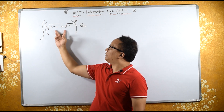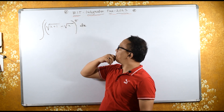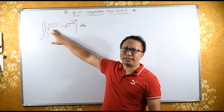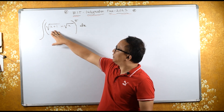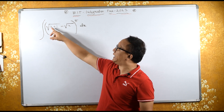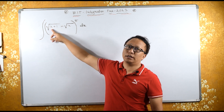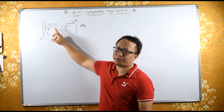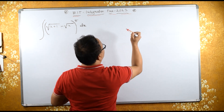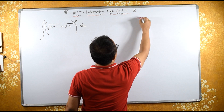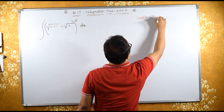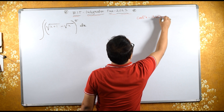Now what we can do is rationalize, but it will be very lengthy. Instead, I will use hyperbolic substitution — x equals to sinh squared. The reason is we know that cosh squared x minus sinh squared x equals 1.